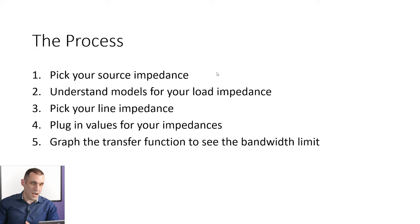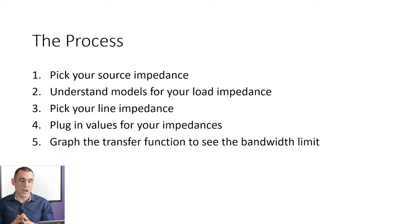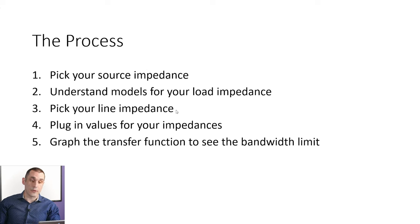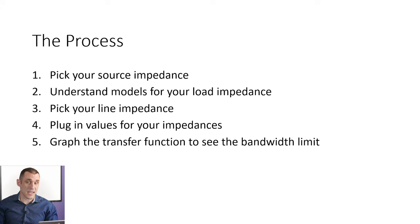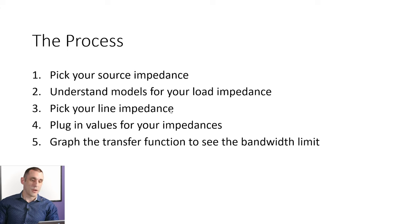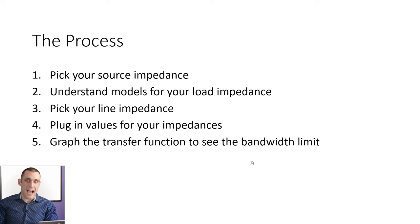Here's the process for determining a transfer function, which you can then use to determine the bandwidth-rise time relation. First, pick your source impedance. Then understand what the model is for your load impedance — this depends on the type of component or packaging used. Then pick your line impedance. The line impedance could be purely resistive at 50 ohms, but in real systems you will have some losses contributing to line impedance. In our examples we'll stick to a real line impedance to keep things simple, then plug in all values and graph the transfer function to see the bandwidth limit.